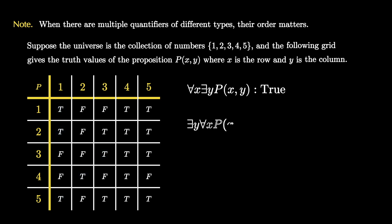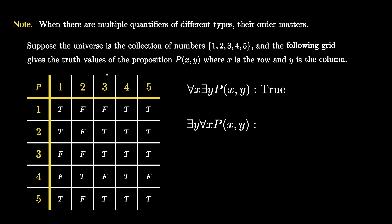Let's switch the order of the quantifiers: 'there exists y such that for all x, P(x, y).' This says we need to find a column where every single row is true. Column 1 has a false value; column 2's first entry is false; column 3's first entry is false. But in column 4, every single entry in every row is true. We don't even need to check any other columns because this is an existential statement — we've found one column where every row entry is true, so this proposition is true.